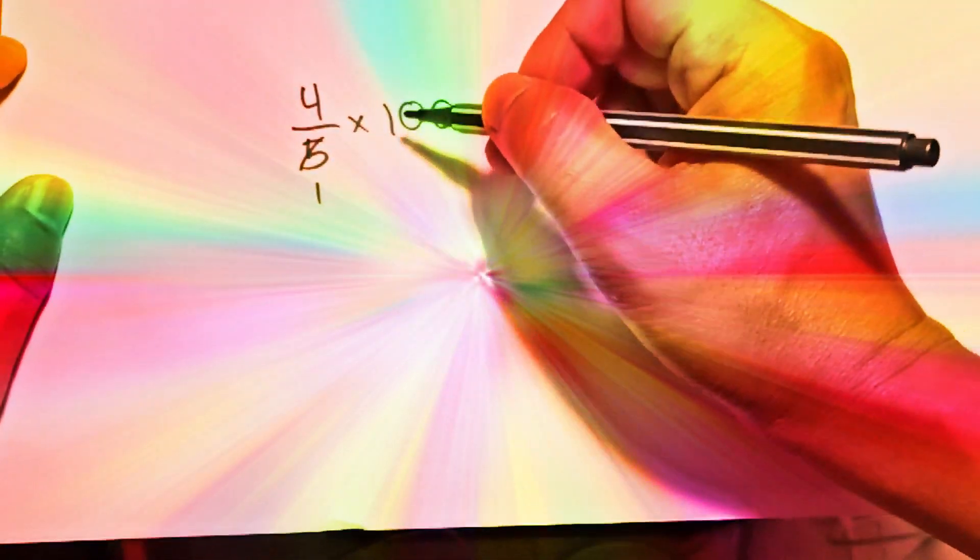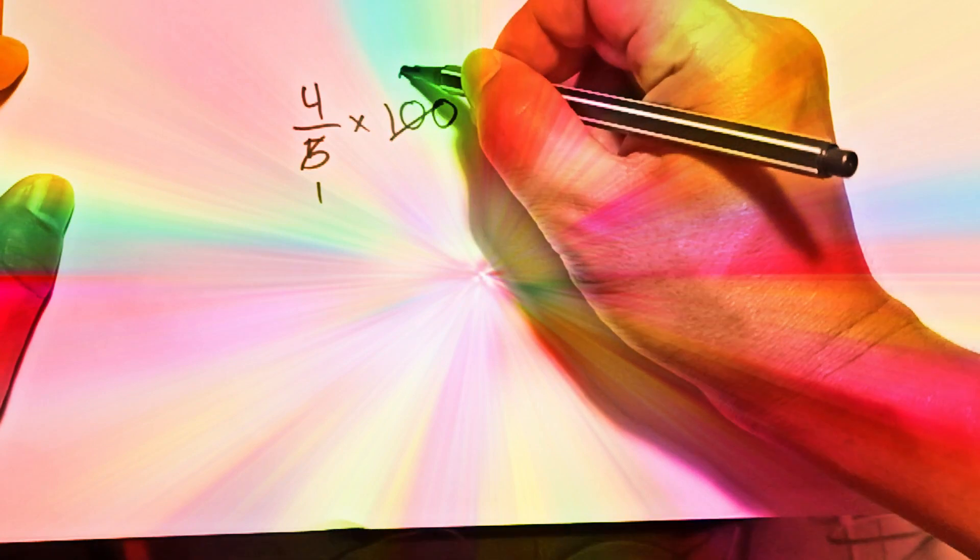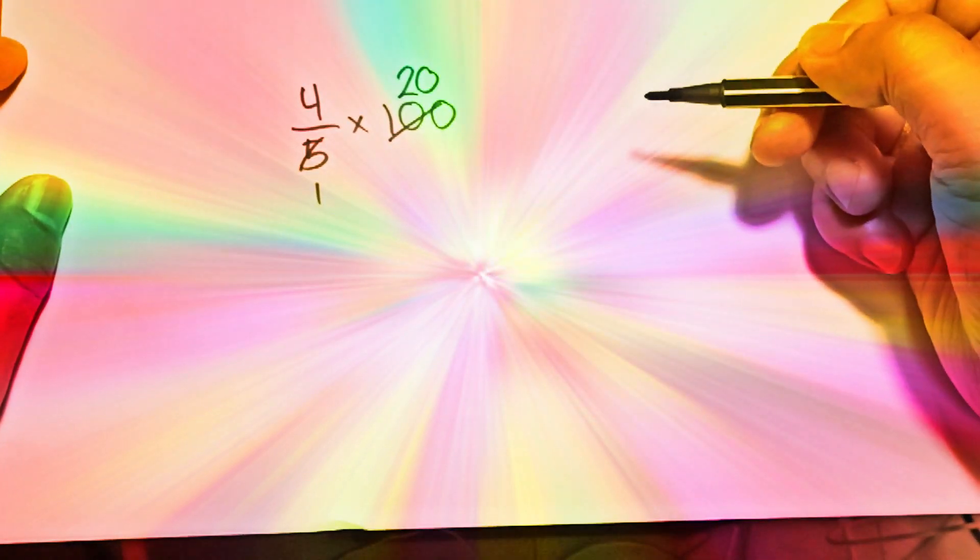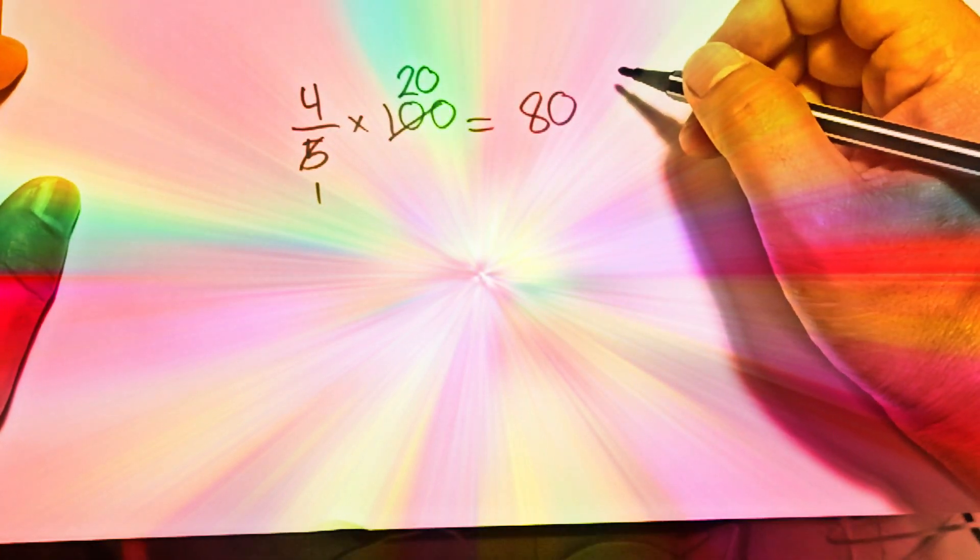4 over 5. All you have to do is multiply by 100. So 5 divided by 5 is 1, 100 divided by 5 is 20, and then 20 times 4 is 80.